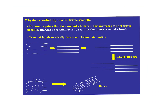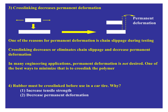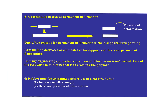Crosslinking increases tensile strength because fracture requires crosslinks to break. Increased crosslink density requires more crosslinks to break, so all that chain slippage that would otherwise occur is inhibited by the presence of crosslinks. Crosslinking also decreases permanent deformation. Permanent deformation occurs when chain slippage is allowed; crosslinking eliminates this or decreases it. In many engineering applications, permanent deformation is not desired — one of the best ways to minimize it is to crosslink the polymer, which is what we do with rubbers.